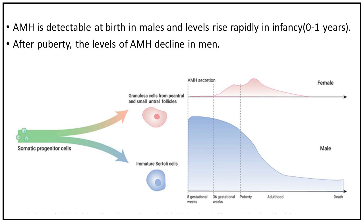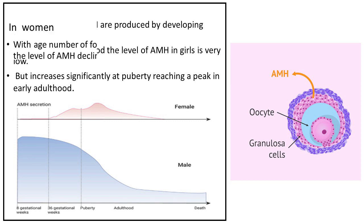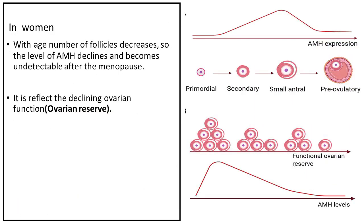Levels of AMH rise rapidly in infancy in males, but after puberty the levels decline. In females, small amounts of AMH are produced by developing follicles in the ovaries. At birth and in childhood, the level of AMH in girls is very low, but it increases significantly at puberty, reaching a peak in early adulthood.